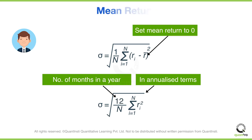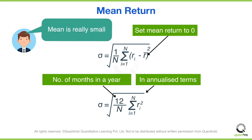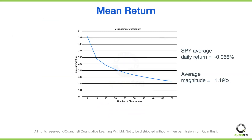It is also customary to set the mean return to zero. We can do this because it is typically much, much smaller than the fluctuations around it. Let us take the year 2022 as an example.